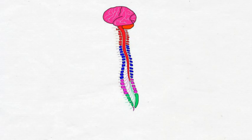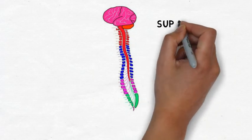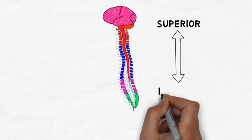There are several terms that we use to indicate direction in neuroscience. Some are very straightforward. For example, superior always means towards the top of the head, inferior always means towards the feet.